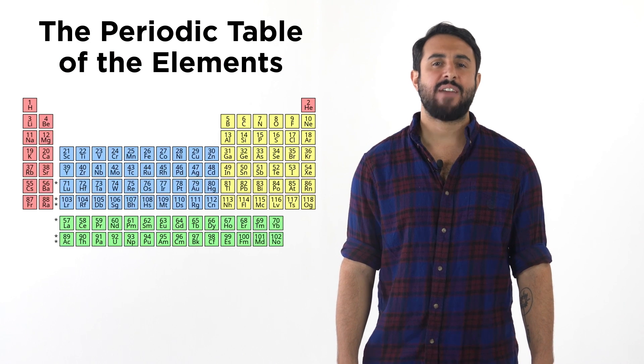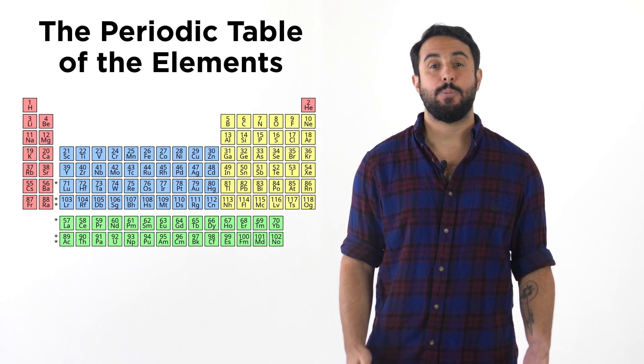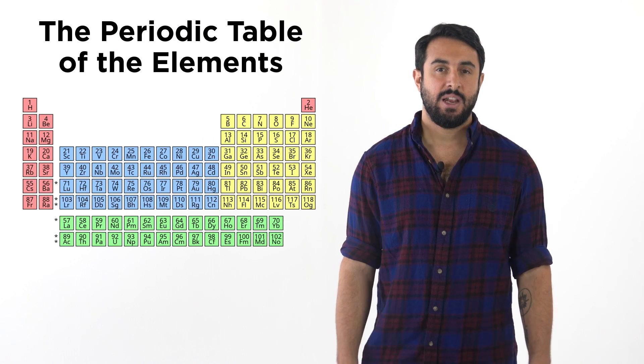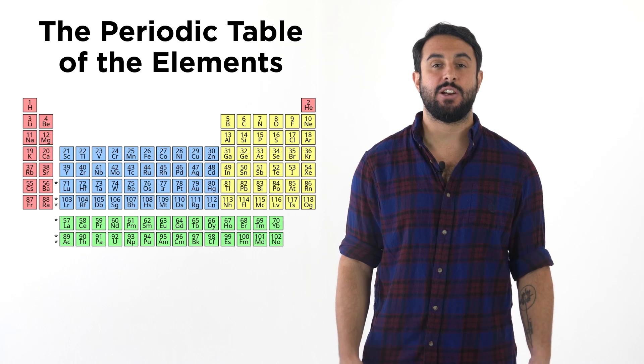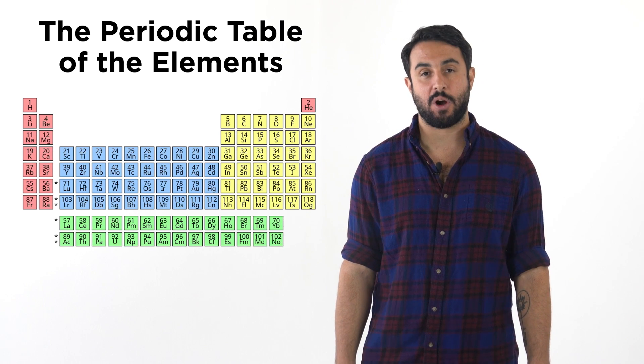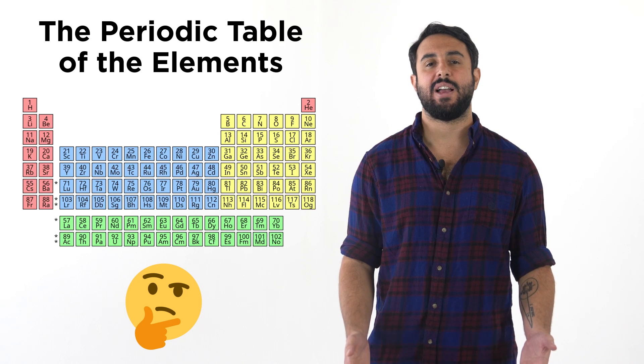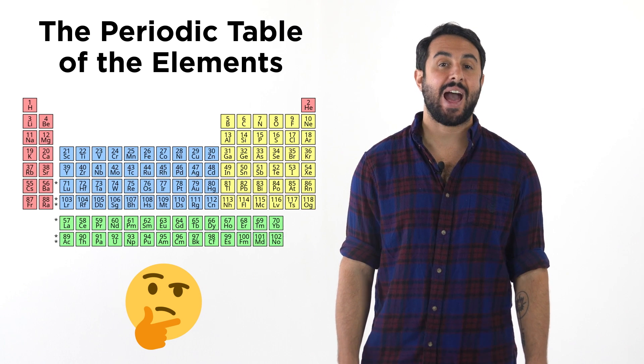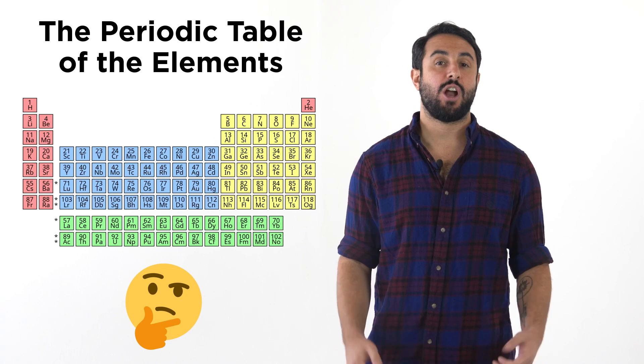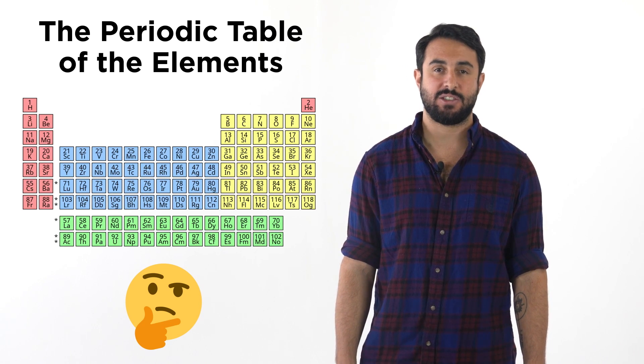Professor Dave and Chegg here. Everyone has seen this before, it's the periodic table of the elements. It displays all the elements in an organized way, according to their properties. But why is it organized this specific way, and how did this organization come about? Let's get an introduction to the periodic table and its history.